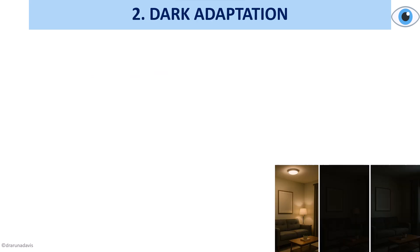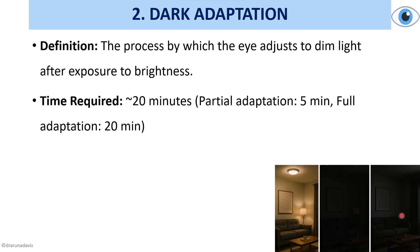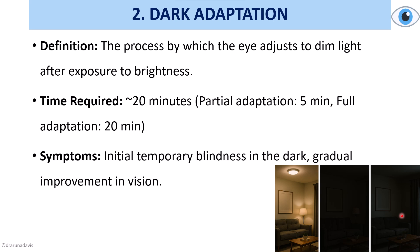Dark adaptation is a process by which the eye adjusts to dim light after exposure to brightness — just like when you switch off the light in a room and it is pitch dark, but then some structures gradually become visible. The time required for this is approximately 20 minutes. The initial symptoms include temporary blindness in the dark, followed by a gradual improvement in vision.